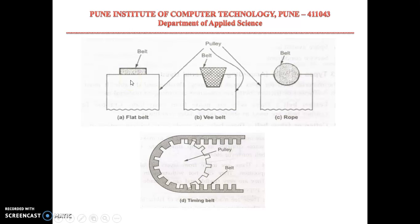Flat belts are used for a distance up to eight meters, and V-belts are used for a distance up to three meters. Now, what are the basic differences between flat belt and V-belt?